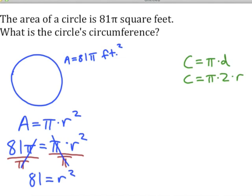This looks very similar to the problem we just solved with the square. We want to find the radius, so we'll take the square root of 81. That gives us a radius of 9 feet.